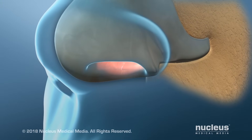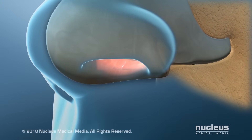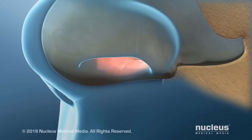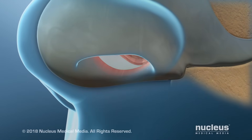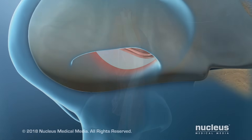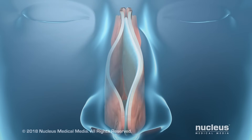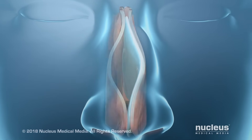To begin the procedure, the surgeon will make an incision in the mucosa inside one of your nostrils. Then the mucosa will be lifted away from the septum so the surgeon can see it.